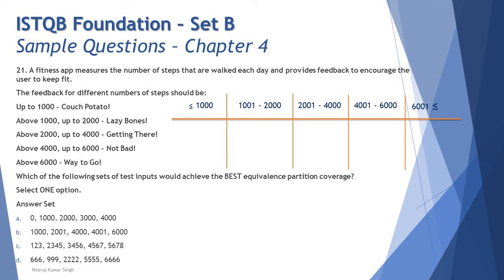For Option C — values 1234, 2345, 3456, 4567, 5678: 1234 is class 1; 2345 and 3456 are both class 3; 4567 and 5678 are both class 4. Option C also covers only 3 partitions. For Option D — values 666, 999, 4222, 4555, 4666: 666 and 999 both fall in class 1; 4222 falls in class 3; 4555 falls in class 4; and 4666 falls in class 5. That means Option D covers partitions 1, 3, 4, and 5 — four partitions out of five.